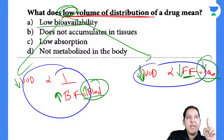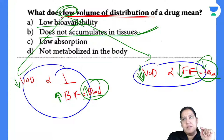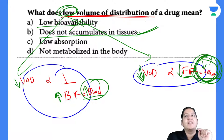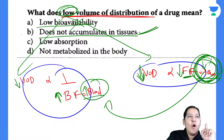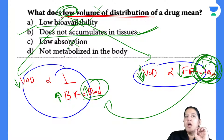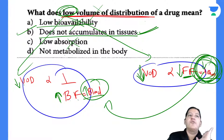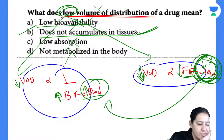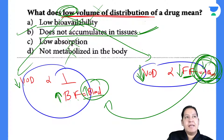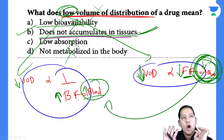The correct answer is B. This was a difficult level question. If you don't know the concept, it is highly difficult. Volume of distribution is inversely proportional to bound form and directly proportional to free form. Bound form remains in blood and free form remains in tissue. If you know these concepts, you can apply them everywhere.